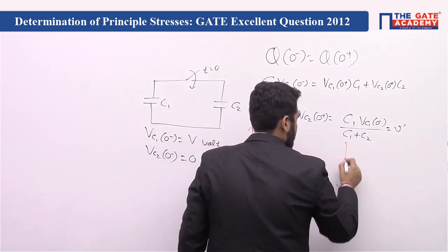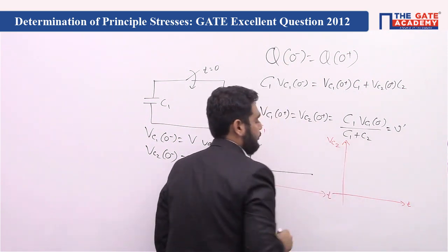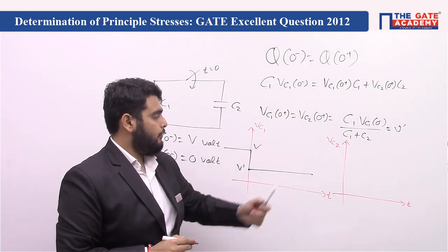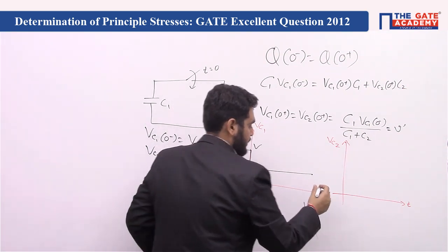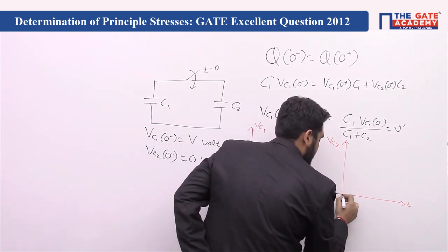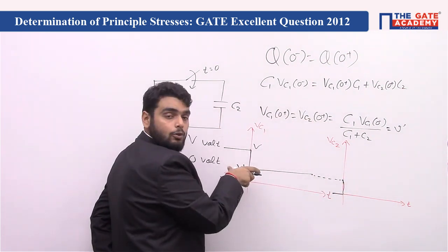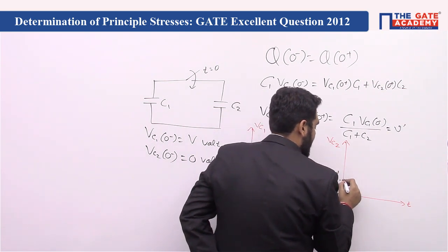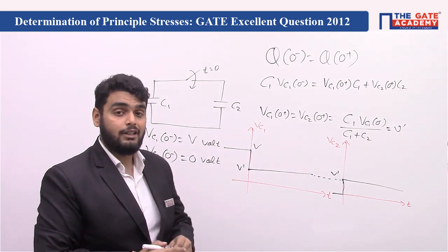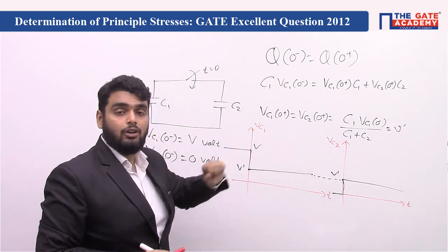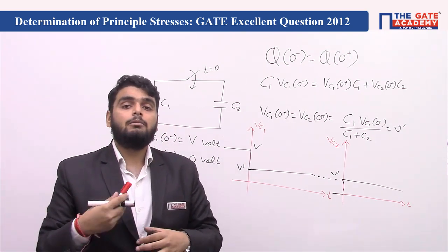We can also draw the waveform for capacitor C2. Before t = 0, it has 0 volts, and then it charges to the same particular voltage V' and remains at this voltage till t tends to infinity. So from the same question, we have developed three more useful results, and we should always remember this charge conservation formula.